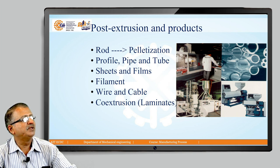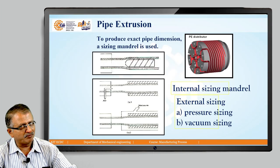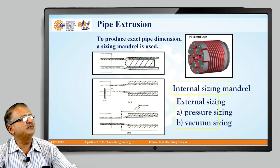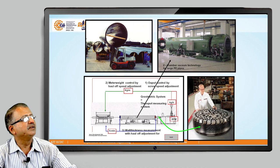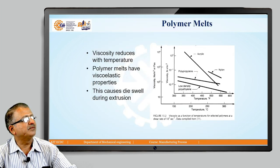Post-extrusion products include rods, profiles, pipes and tubes, sheets and films, filaments, wire and cable, and co-extrusion laminates. Pipe extrusion is very common — exact pipe dimensions require a sizing mandrel, using internal sizing and external sizing by pressure or vacuum. Large-diameter pipes of required size and length can be produced with no size limitation, which is a key characteristic of the extrusion process.